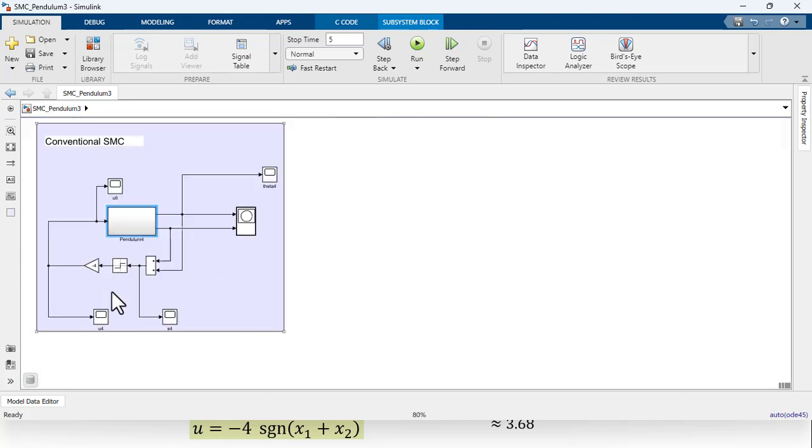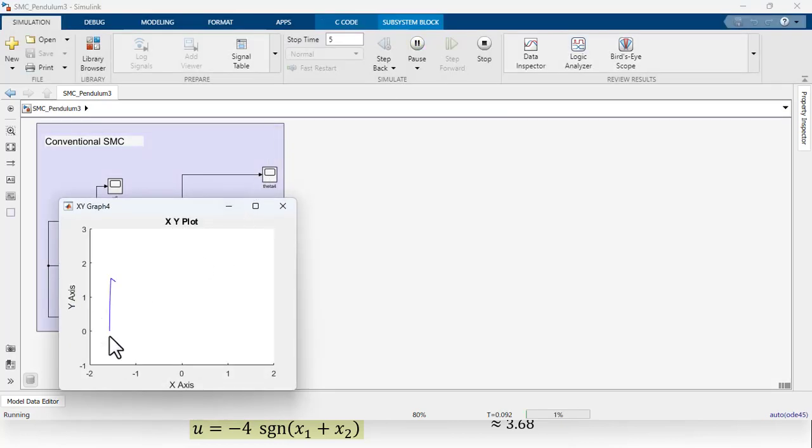We simply simulate to see the response of this system. Here is the phase portrait. We had set some initial conditions. The initial velocity was set to be equal to 0.